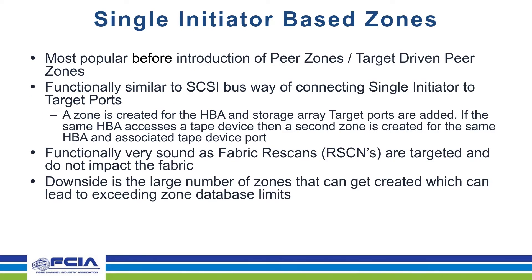The first type is a single-initiator-based zone, which is very similar to how we used to connect when we had direct-attached storage on a SCSI bus — where you had a single HBA, a single adapter in the server connected to either several disks or an external storage array directly connected to the server. Basically, you have one HBA port zoned with one target port. That way, the RSCN domains are very targeted, and if something happens with the initiator or the target port, only the two devices are notified, with no impact on the rest of the fabric.